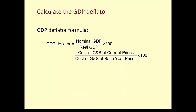On to the GDP deflator — this is a different type of index. Here we look at nominal GDP in a particular year, covering all components: consumption, investment, government expenditure, and exports (imports are excluded, so it's goods produced in the economy). In the numerator, nominal GDP is the value of GDP at current prices. In the denominator, we take the quantities produced in the current year and multiply by base year prices. Unlike the CPI, where the basket of goods is constant, for the GDP deflator the basket changes every year.